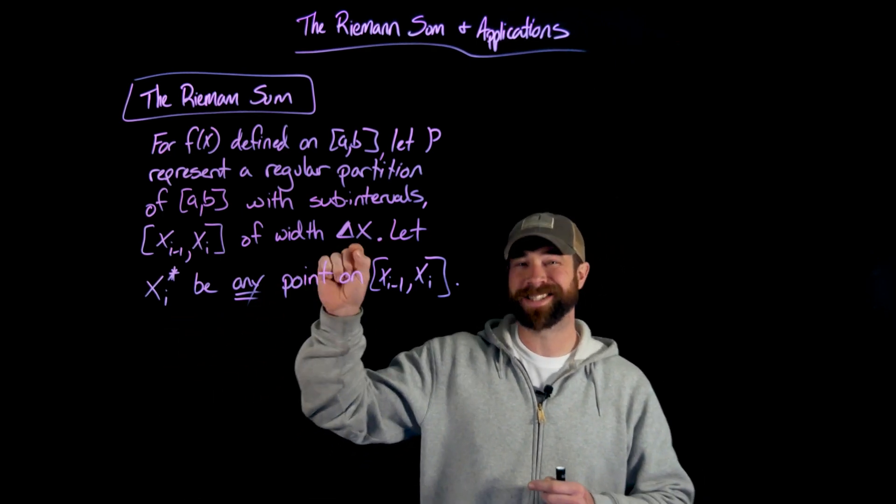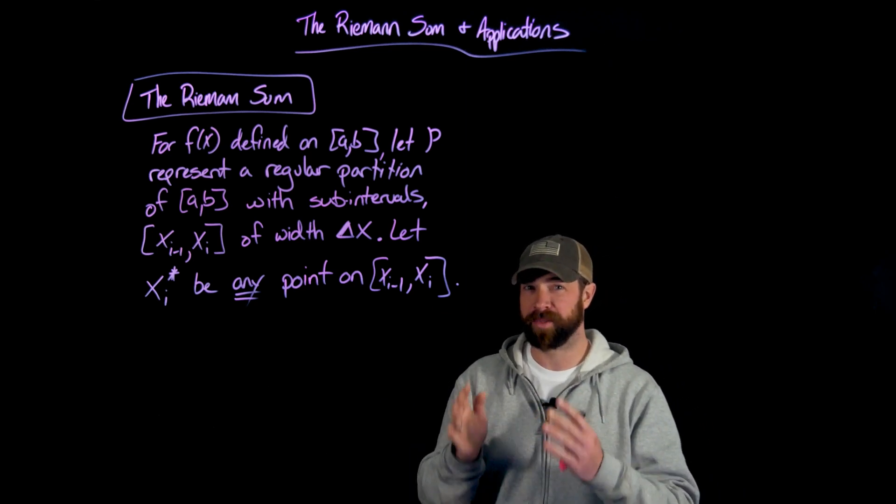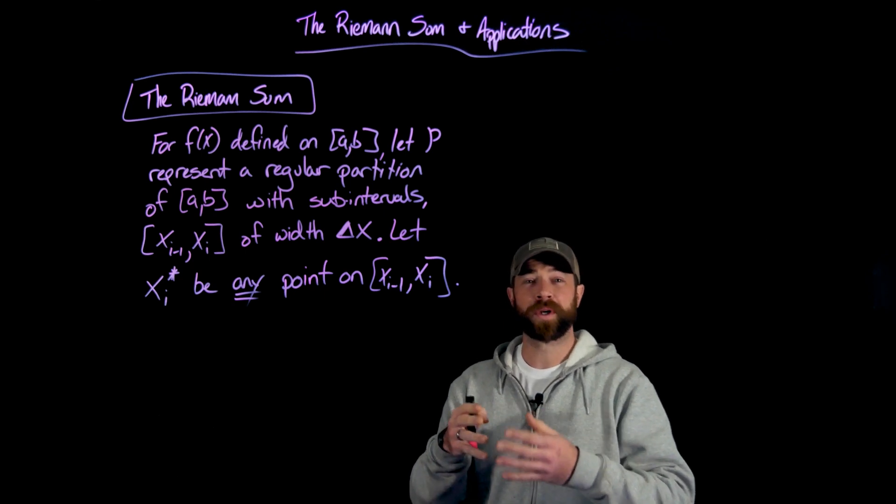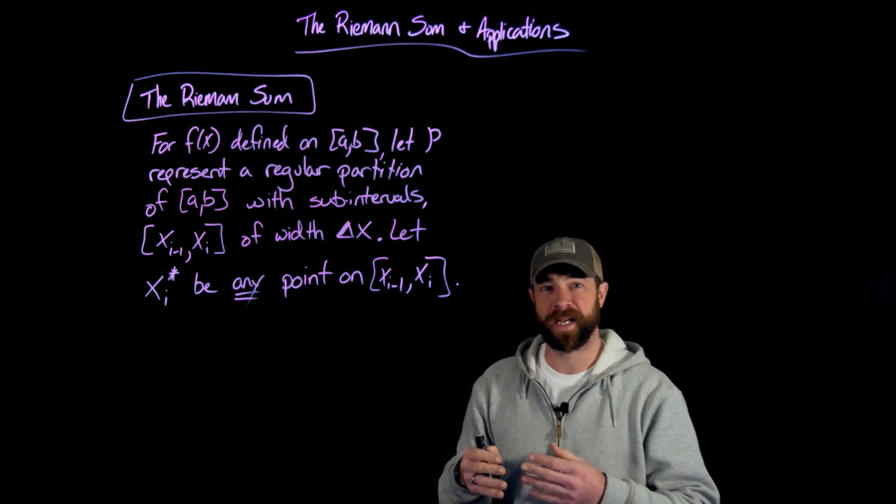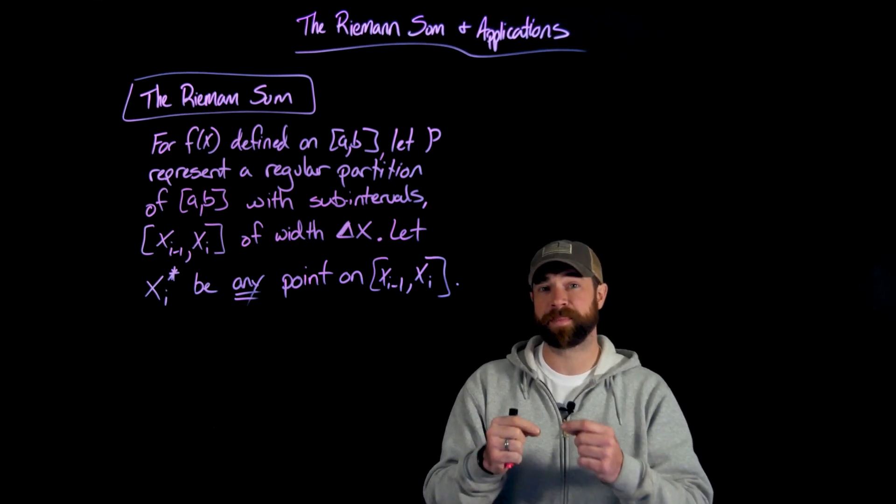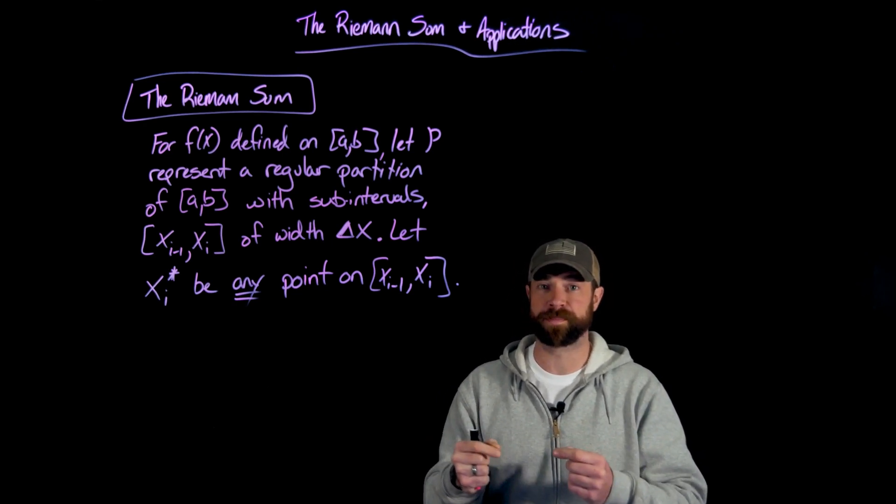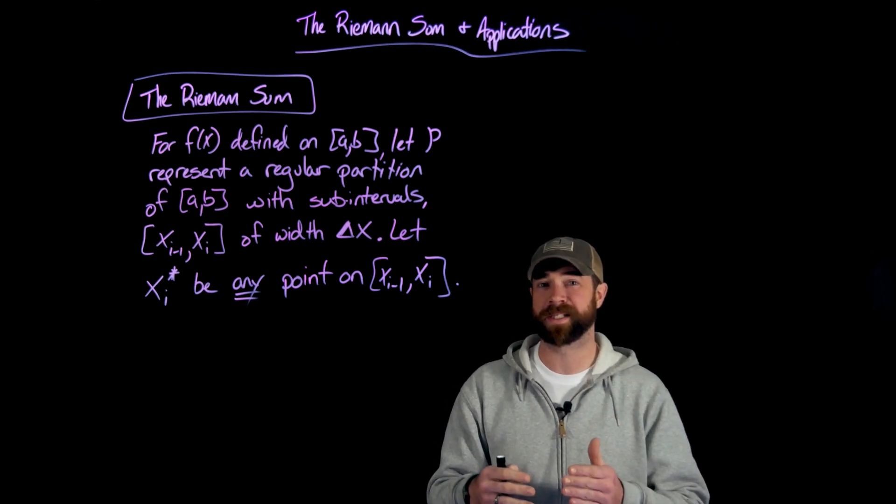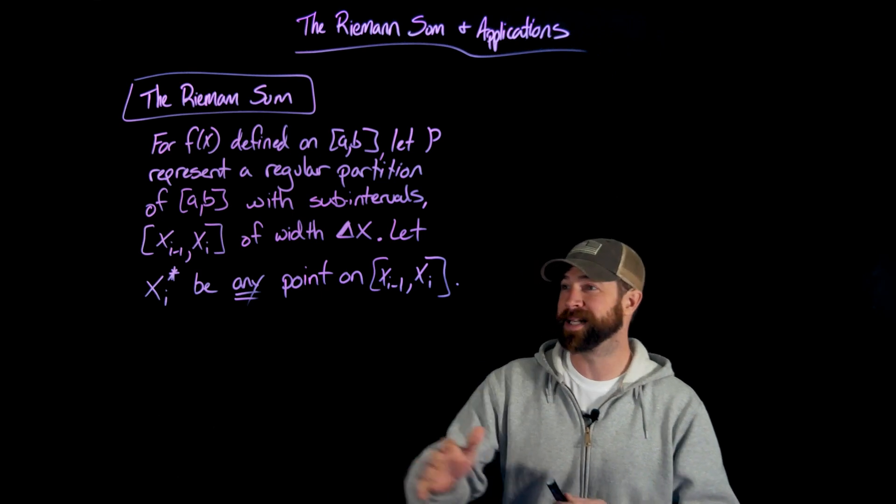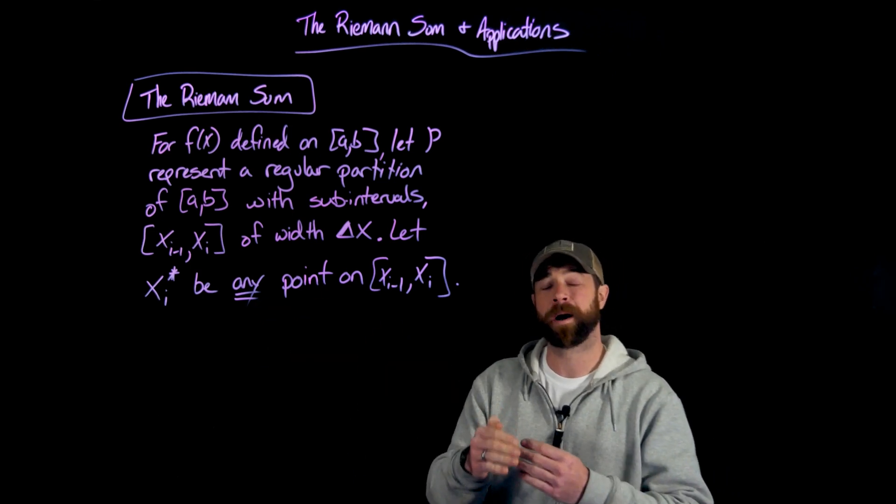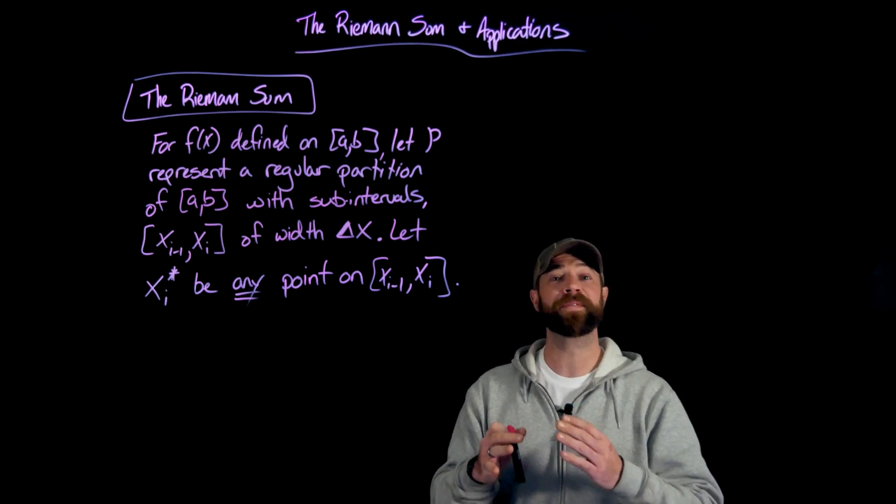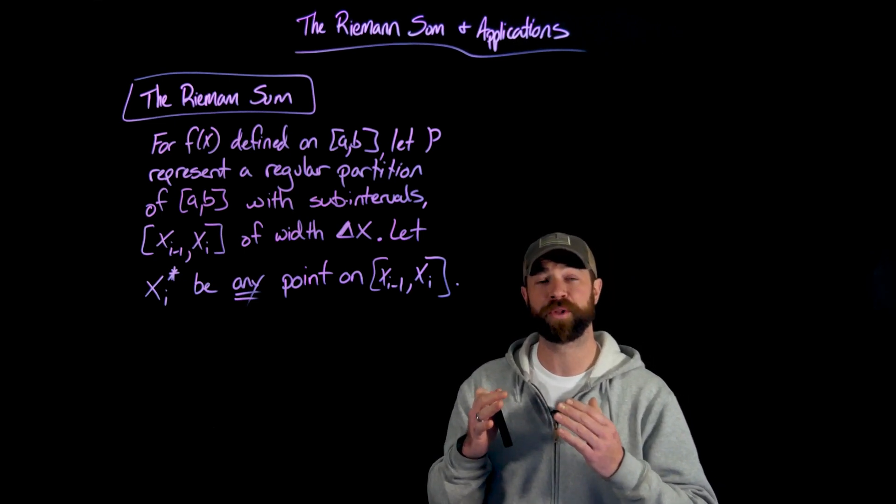We have xi star, and this is going to be any point on the ith interval. And this will be important for future proofs of what we're going to try to do with finding the area, is that if we have a function that's continuous nearly everywhere, but it has a few discrete discontinuous points, we will be able to jump around these discontinuities to still find areas. And I don't want to get in the weeds on that, but this is a very important statement about being any point on the ith interval. Then, given this setup,